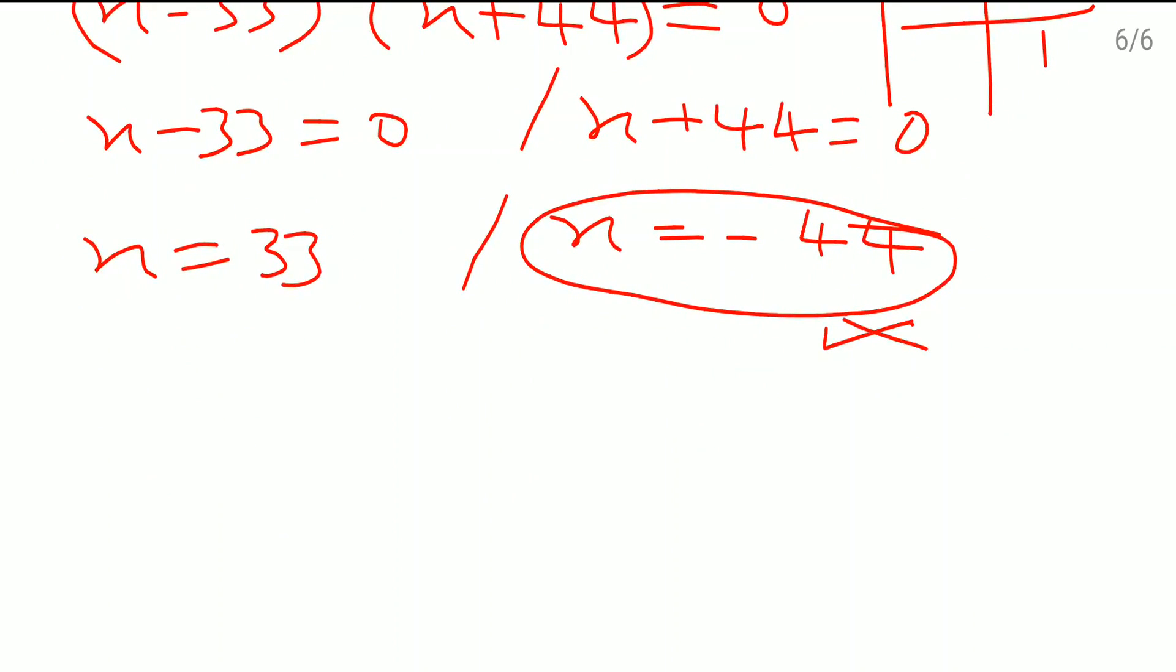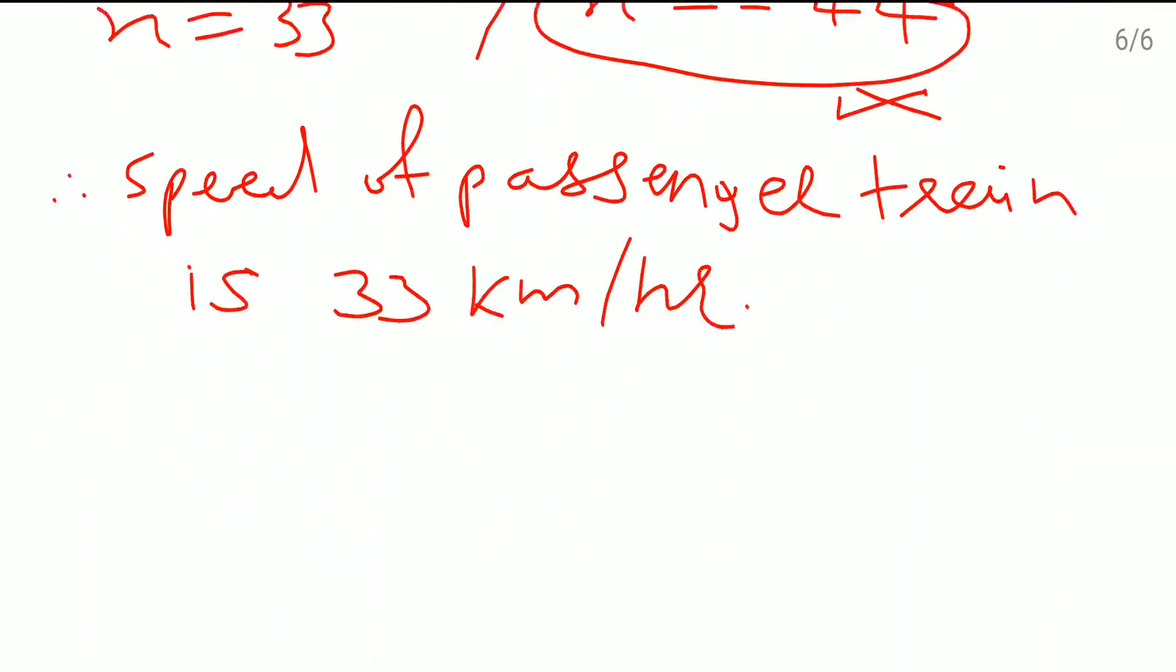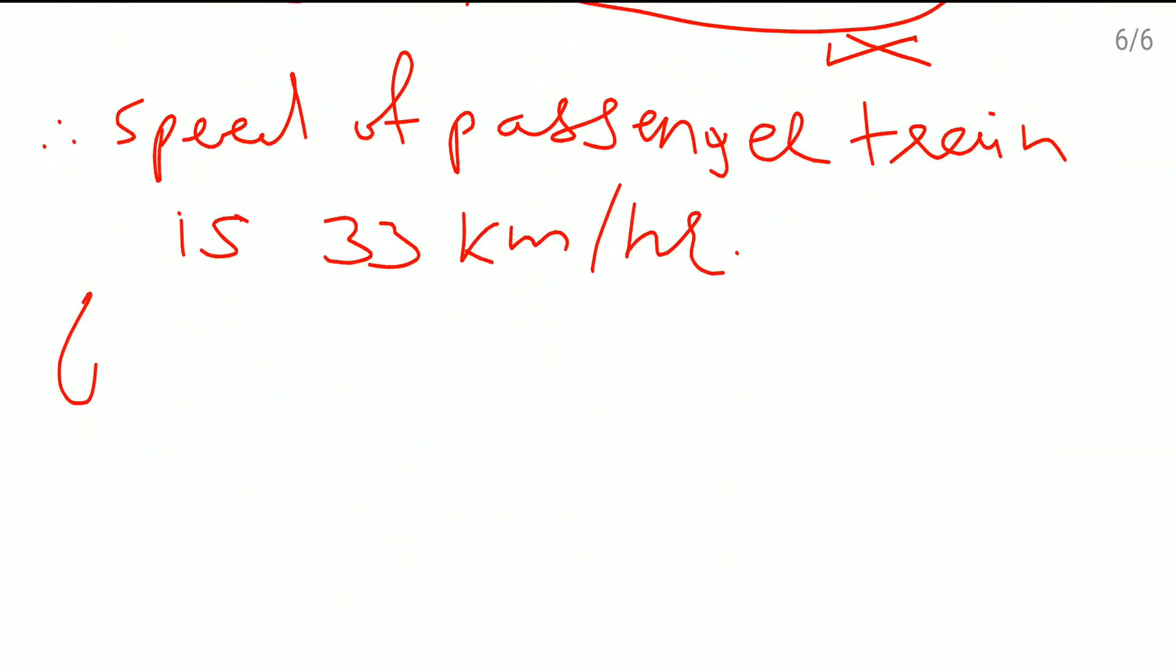We will not consider this one. Therefore, here we will write down: speed of passenger train is 33 km per hour.